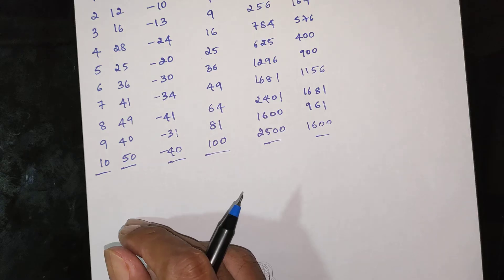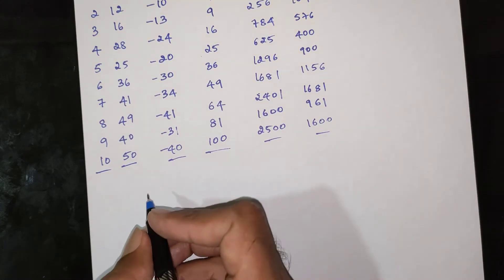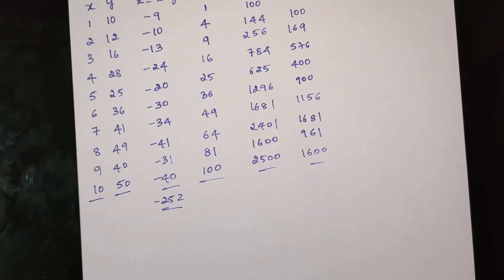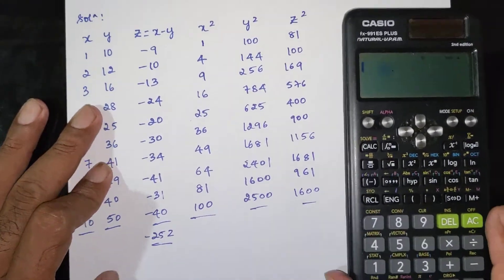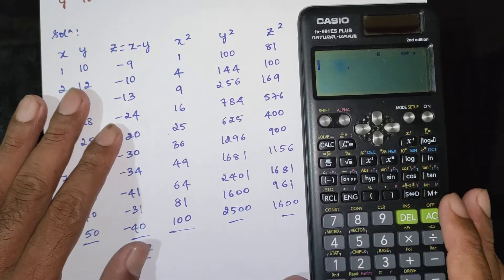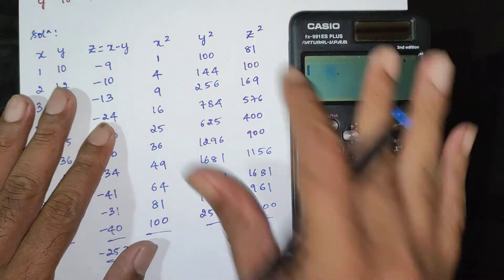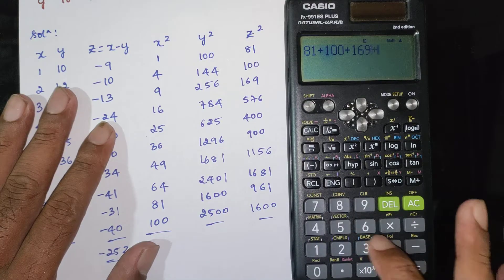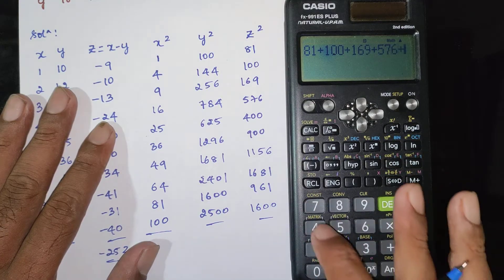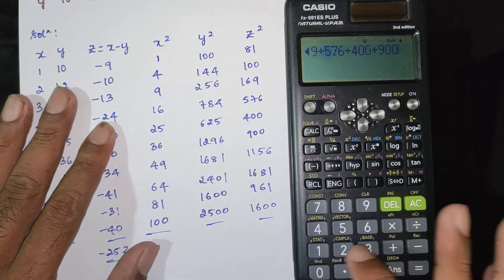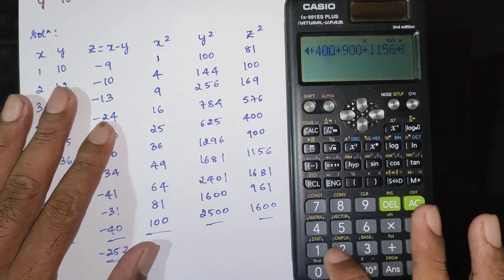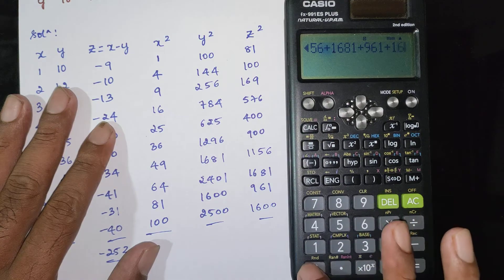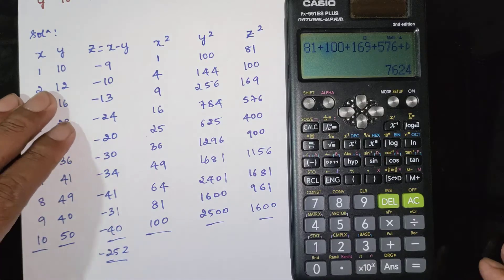Summation of x² = 385. The z² values are: 81, 100, 169, 576, 400, 900, 1156, 1681, 961, 1600. Summation of z² = 7624.